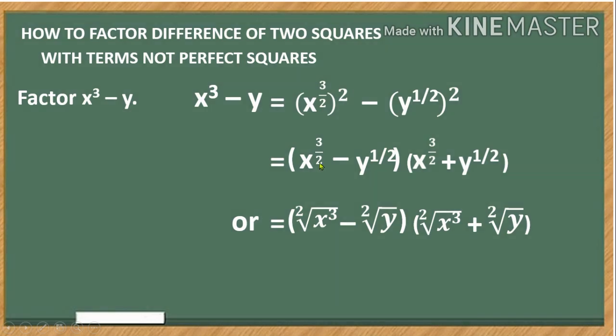Now x raised to the power of 3 over 2 can be written as the square root of x cubed. What we have here is the denominator in your exponent becomes the index of your root. So in this case we have here 2, and similarly we have also this index which is 2.